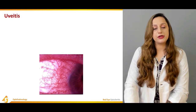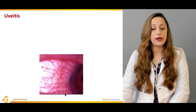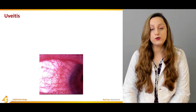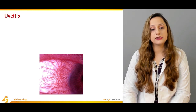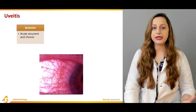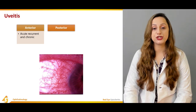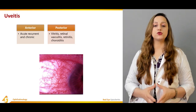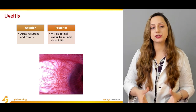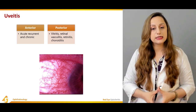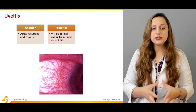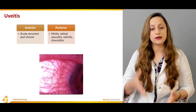Uveitis involves the uveal apparatus, where infections and inflammations are quite common. We have anterior uveitis, which can be acute, recurrent, or chronic in nature, and posterior uveitis, which can be related to viritis, retinal vasculitis, retinitis, and choroiditis. These two variants — anterior and posterior uveitis — collectively represent the spectrum of uveal involvement.